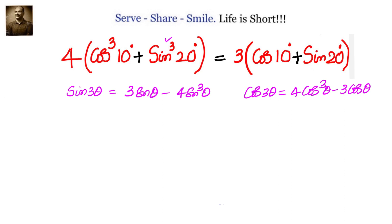Now for the first one we will substitute theta equals 20 degrees because we have sin with 20. So we can write sin 60 degrees equals 3 sin 20 degrees minus 4 sin cube 20 degrees.